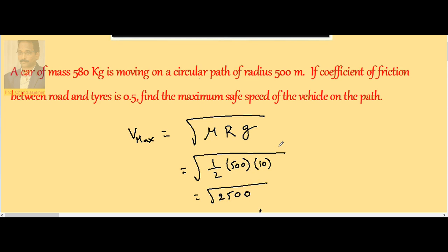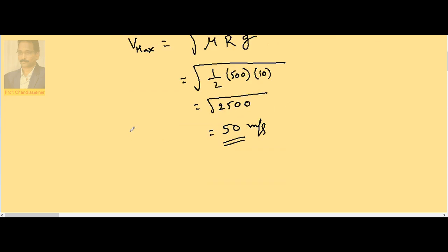Notice there is no dependence on mass. Whether the car is 580 kg or 1000 kg, the safe speed depends only on the radius and the coefficient of friction.